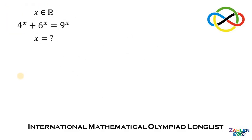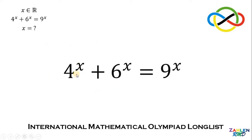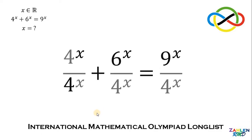Let's answer this question together. Our goal here is to solve for the value of x given this equation: 4 raised to x plus 6 raised to x equals 9 raised to x. To answer this question, let's play around a little bit. What will happen if we divide all terms by 4 raised to x?